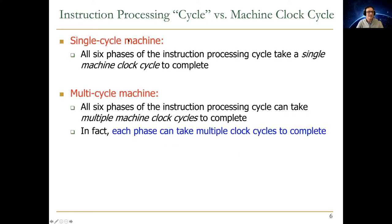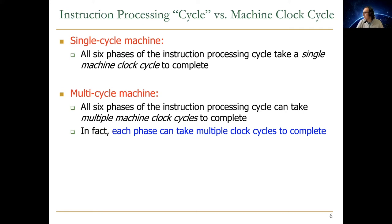In a single-cycle machine, all six phases of the instruction processing cycle take a single machine clock cycle to complete. In a multi-cycle machine, that's not true — all six phases can take multiple machine clock cycles. In fact, in a multi-cycle machine, each phase can take multiple clock cycles to complete, which we're going to discuss and see in much more detail today.